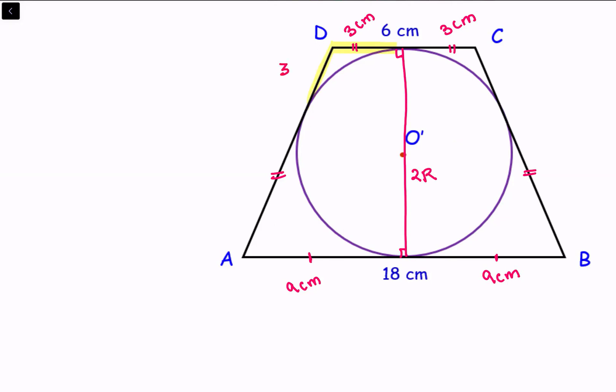So this is 3 centimeter. Same way down below from point A we have drawn two tangents. So these two tangents will be equal in length. And this will be 9 centimeter.